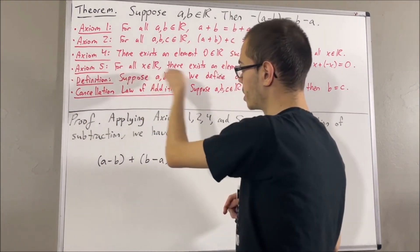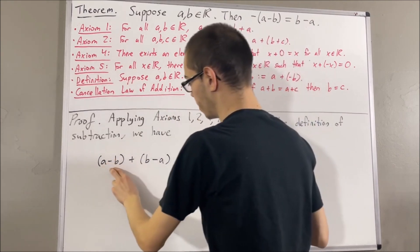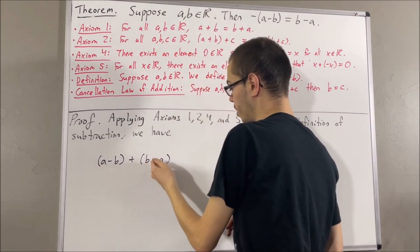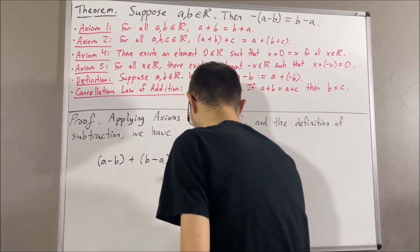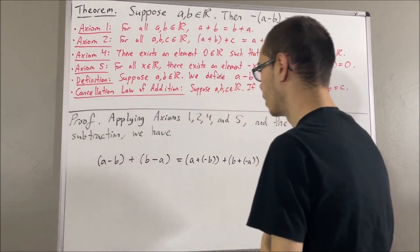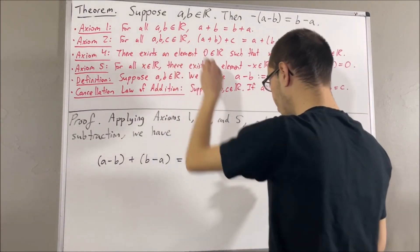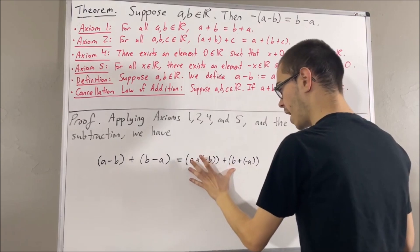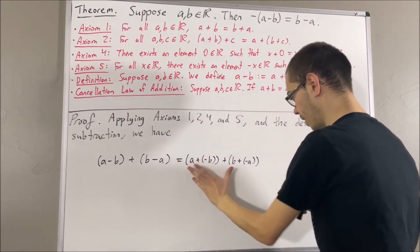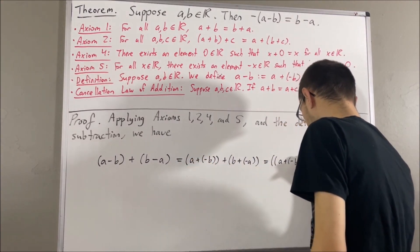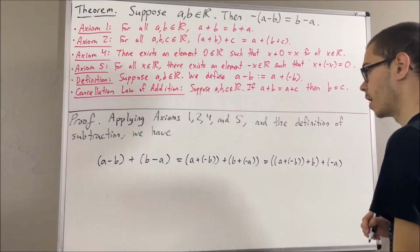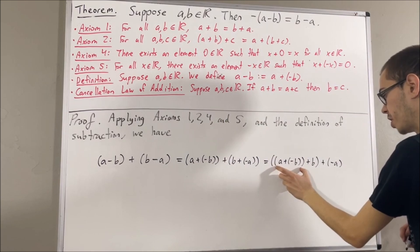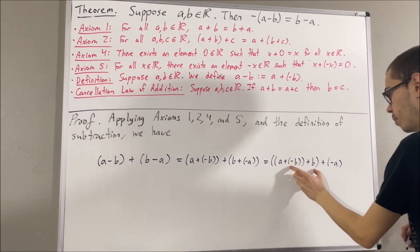First, by the definition of subtraction, a minus b is equal to a plus the negative of b, and b minus a is equal to b plus the negative of a. Then, by axiom 2, we can move the parentheses around a plus the negative of b plus b. And then, by axiom 2 again, we can move the parentheses around the negative of b plus b.